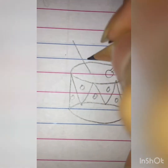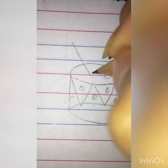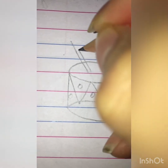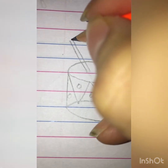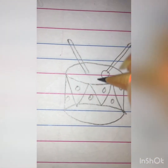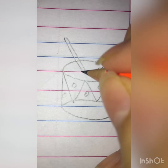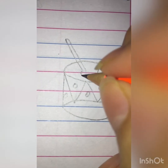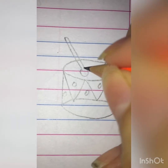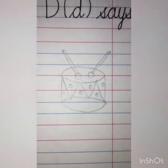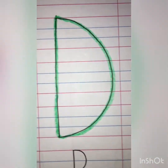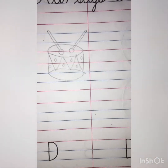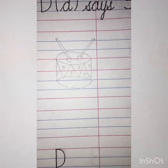One slanting line like this. Other one like this. Then, you will close the chains. D. Drum.